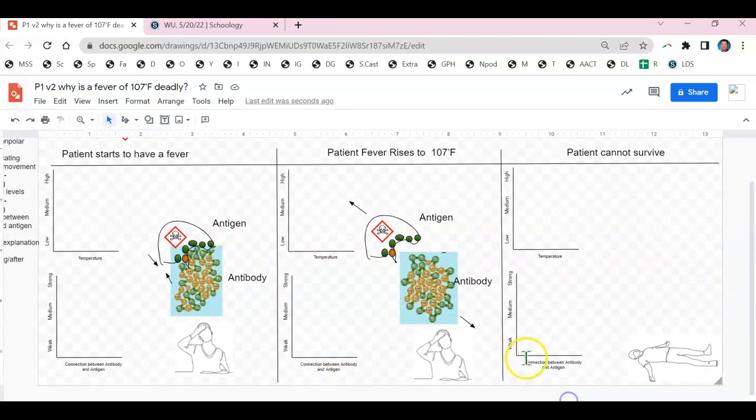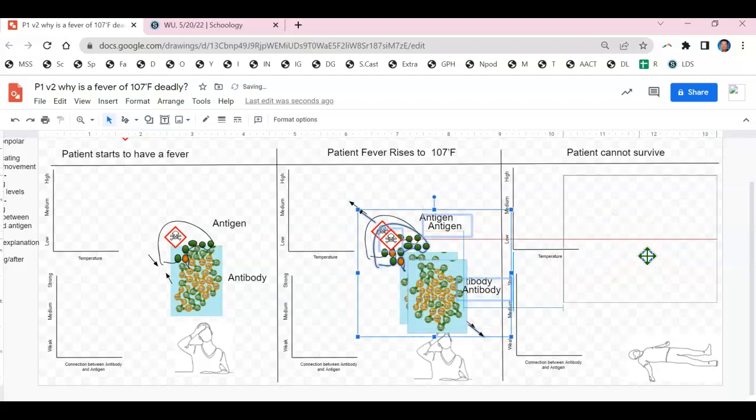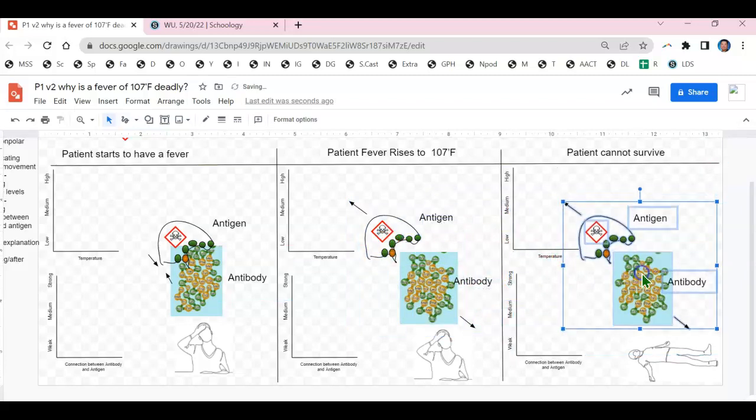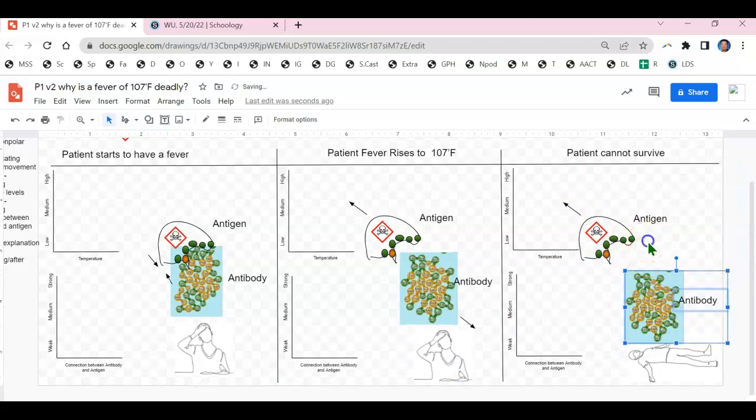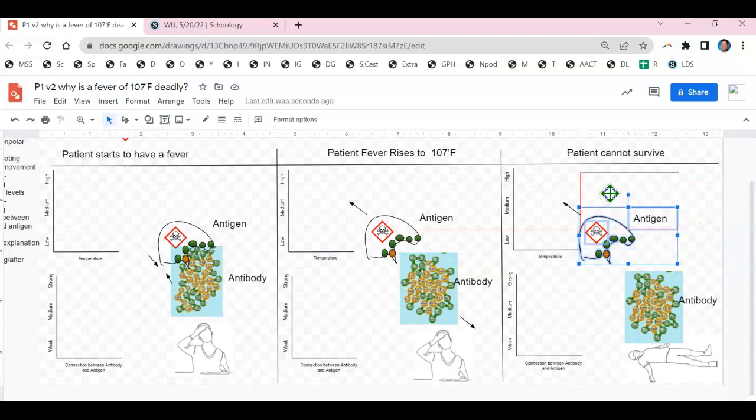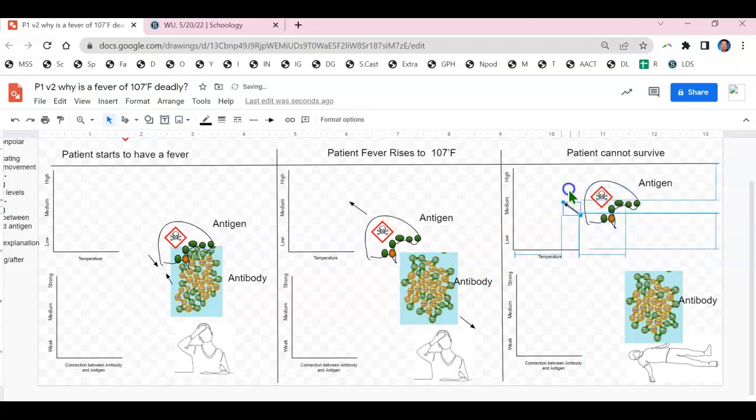And finally with the antigen able to move freely it will multiply within a person's body causing death. So here we can show that the antibody stays the same shape as it was in the previous model, no longer the puzzle piece that fits the antigen. And the antigen can multiply.